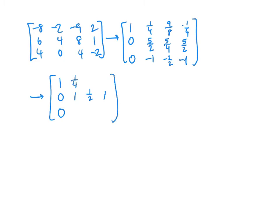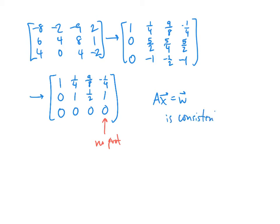I'm just going to look for an echelon form here — no need to get this into reduced echelon form. We can see that if we just add row 2 to row 3, everything cancels out and we get zeros. Because we don't have a pivot in the last column — there's no pivot in the augmented column — that means the matrix equation Ax equals W is consistent. It has a solution. In fact, there's no pivot in the third column either, which means there's a free variable. So this equation has not just one solution, but many solutions.